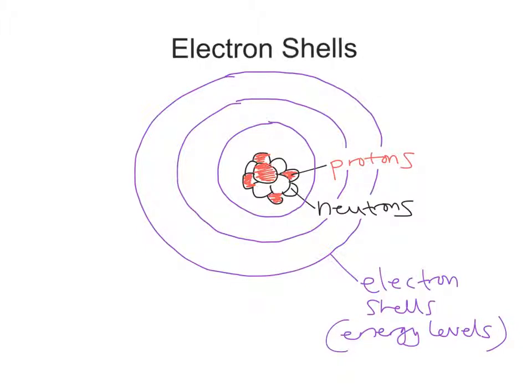And there's only a certain number of electrons are allowed in each shell. And there's a particular rule that we follow. So in the first shell, we're allowed two, two electrons. In the second shell, there are eight.